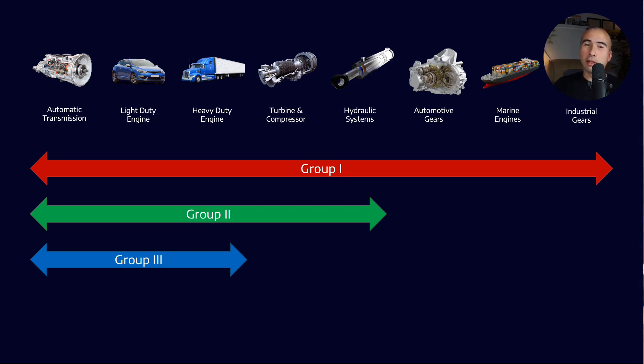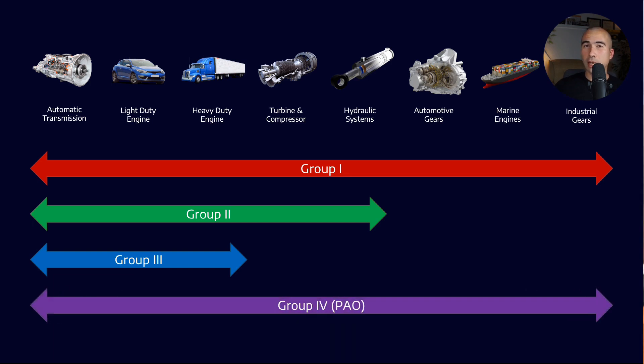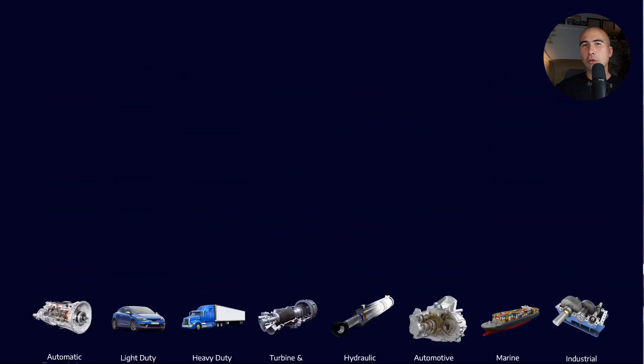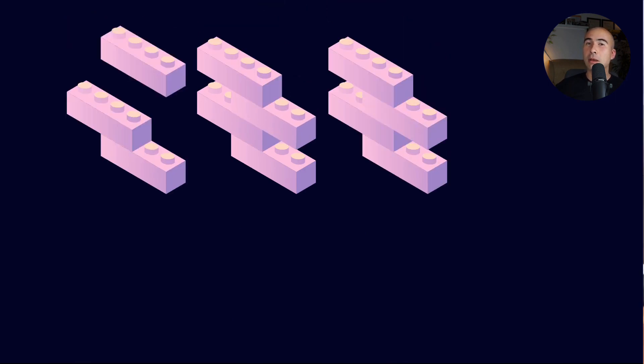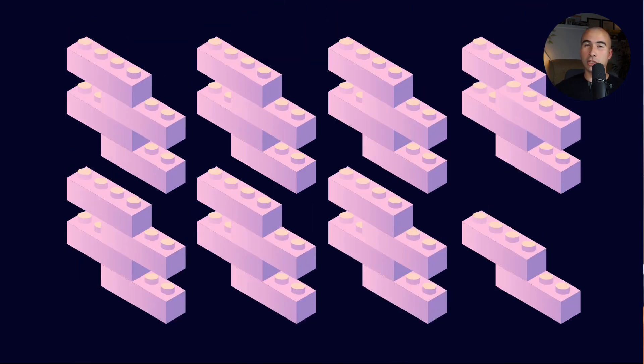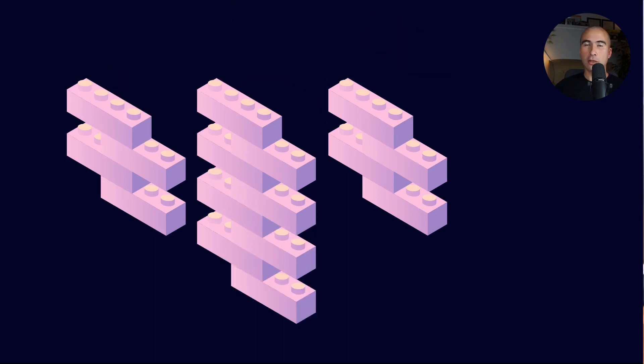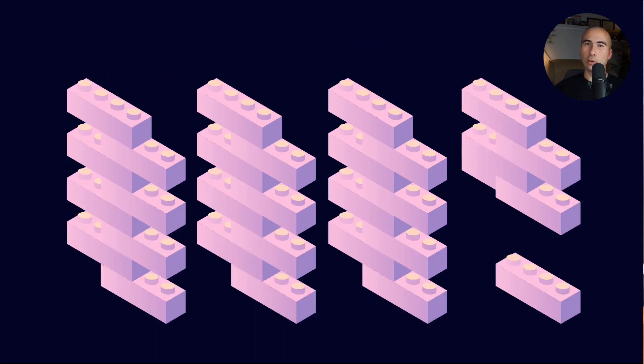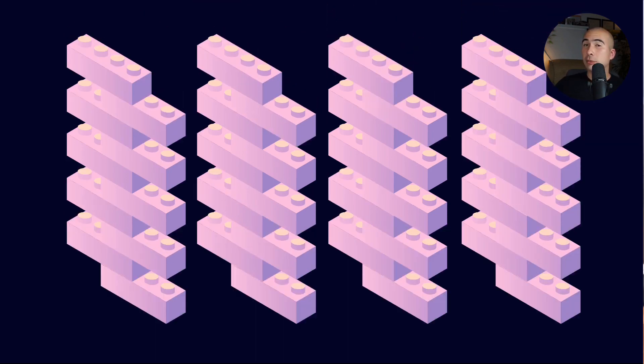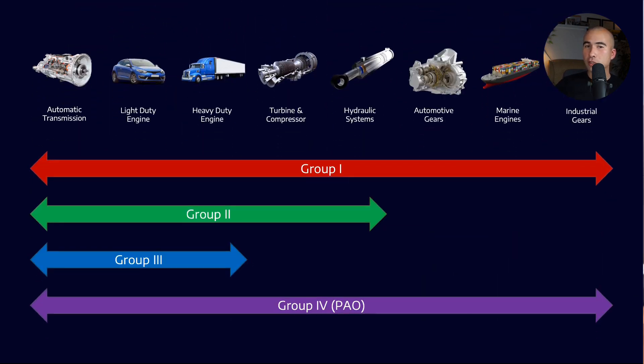Now, the other alternative is I could use a synthetic. So as we talked about, group 4 is the polyalpha olefins. And these are available in a very broad range of different viscosities. Now, the reason for that is that going back to our Lego analogy, synthetic lubricants are like if I took the same Lego brick and then I stack them on top of each other to make something bigger. Now, if I just let the reaction go on longer, what I can create is longer molecular chains. Longer molecules generally equals more viscosity. So our flexibility with PAOs is that I can make both very low viscosity as well as very high viscosity base stocks.